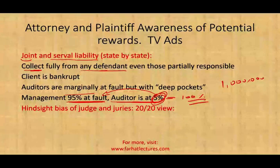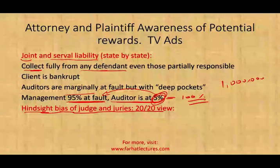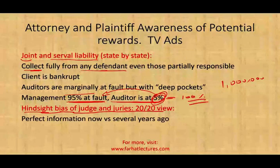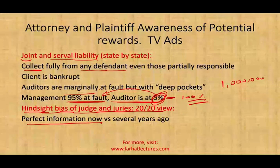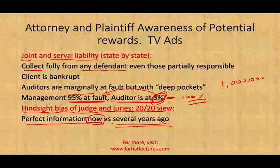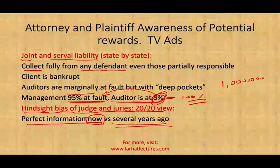Also, attorneys know that hindsight is 20-20 for judges and juries. When they take you to court, they work with perfect information — the jury can see exactly what should have happened. But when you were auditing the company, you didn't know what was going on. You may not even remember what happened years later. So hindsight bias makes it easy for attorneys to question the auditor.